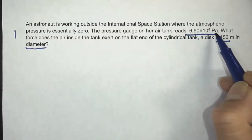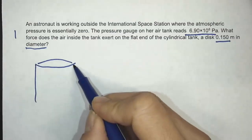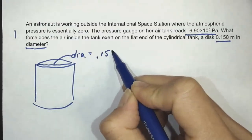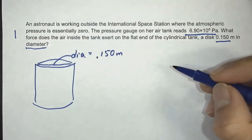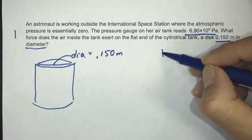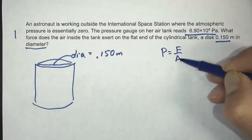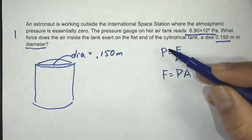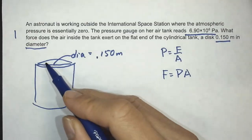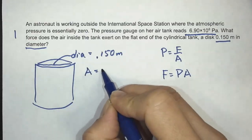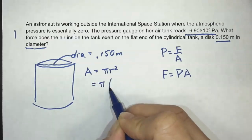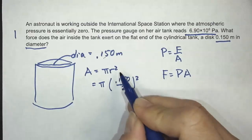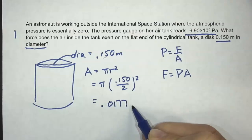The diameter is 0.150 meters and we're given the pressure. To calculate the force, I'll start with P equals F over A. We need the pressure and the area. The area of a circle is pi r squared. So it's pi times 0.150 divided by 2 — I divide by 2 because that's the diameter and we need the radius — squared, and we get 0.0177 meters squared.